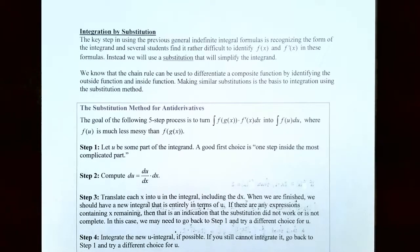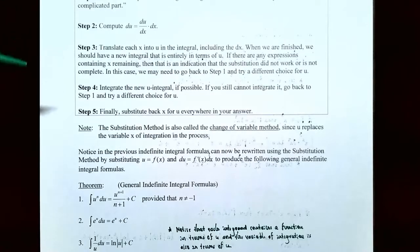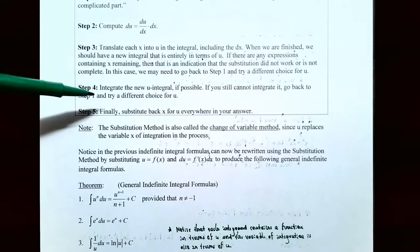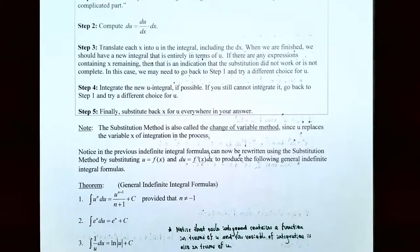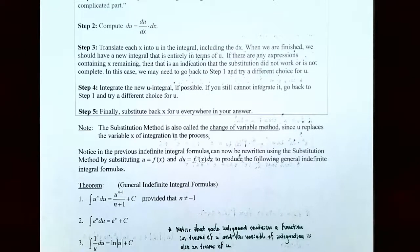In that case, we may need to go back to step one and choose a different u as a substitution. Step four: after you have the integral in terms of u, integrate the new u integral if possible. If you still cannot integrate it, go back to step one and try a different u. Step five: go back and substitute x for u everywhere in your answer for the family of antiderivatives. Sometimes the substitution method is called the change of variable method, because u is replacing the variable x of integration in the process.